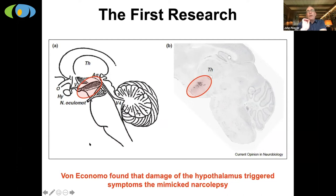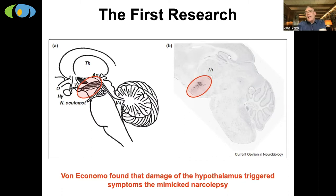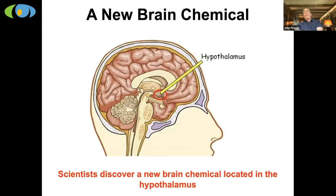Von Economo first identified a brain area that might be linked to narcolepsy symptoms. A particular brain area — when killed in this epidemic — caused symptoms that looked a lot like narcolepsy. People were often very sleepy, had unusual sleep, and some even experienced episodes of cataplexy. That very restricted area is called the lateral hypothalamus, just in front of the brain stem toward your eyes.